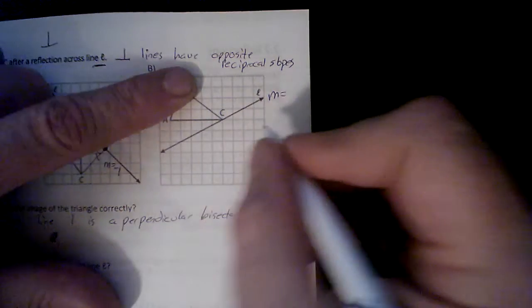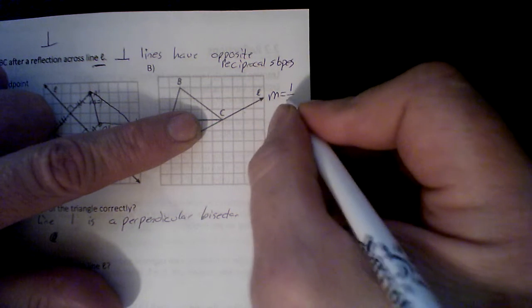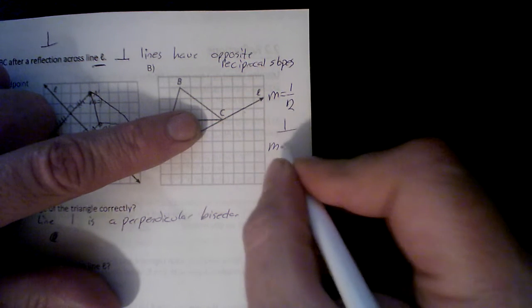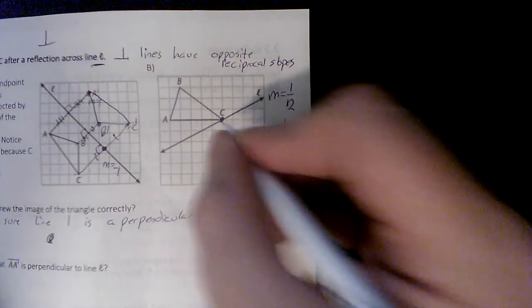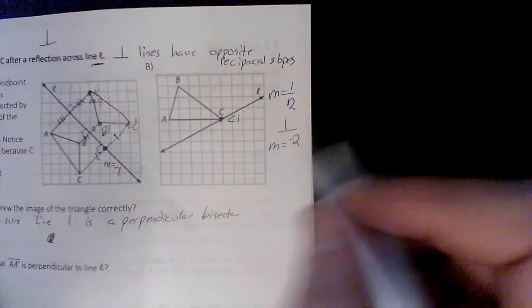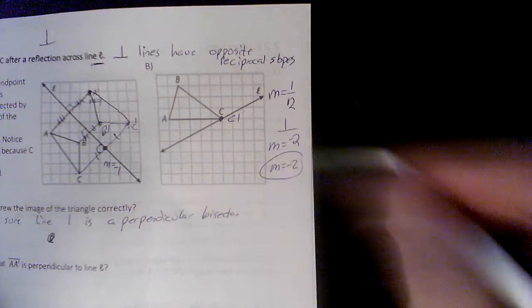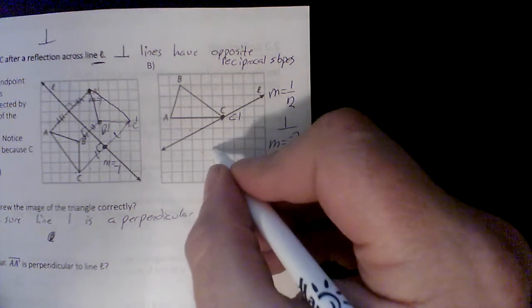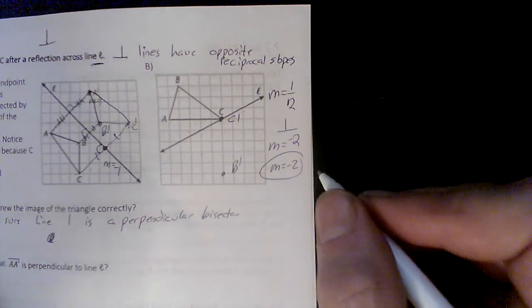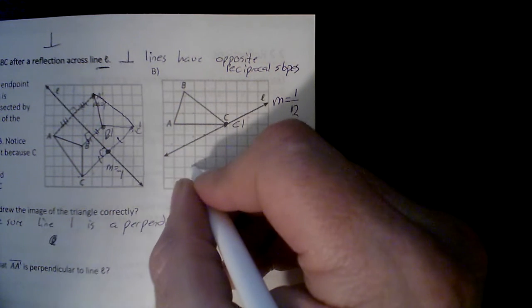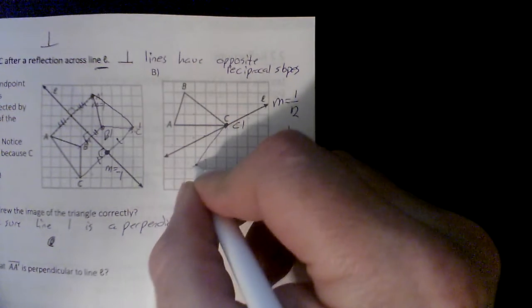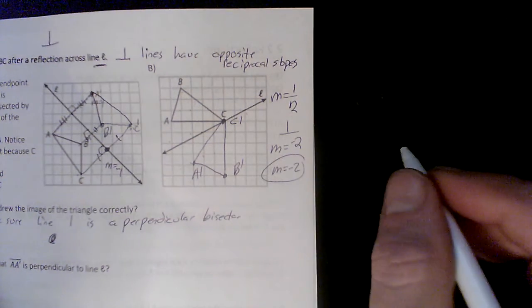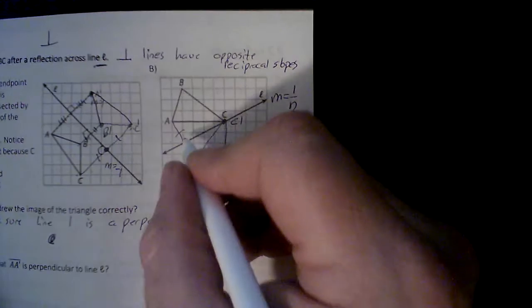On this next one, the slope of the line is 1/2 — it goes up one over two. To be perpendicular I need a slope of negative 2. Point C is easy — C prime is on the other side. For B, I need a slope of negative 2, so I go down two over one, down two over one — I did that twice, so I go down two over one, down two over one on the other side — that's B prime. For A, I go down two over one just once on each side — there is A prime. I now have a reflected line.